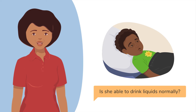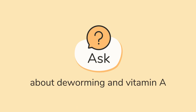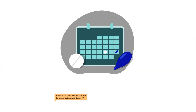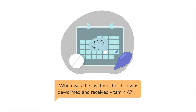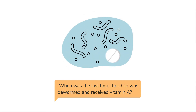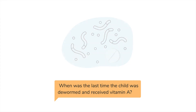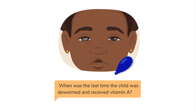It is also more difficult to identify dehydration in a child who is malnourished. Number four: ask about deworming and vitamin A. You can ask: when was the last time the child was dewormed and received vitamin A? If a child has worms, it affects their body's ability to absorb nutrients, which can lead to malnourishment and stunting. Stunted children usually lack vitamin A, which increases their risk of blindness and death.